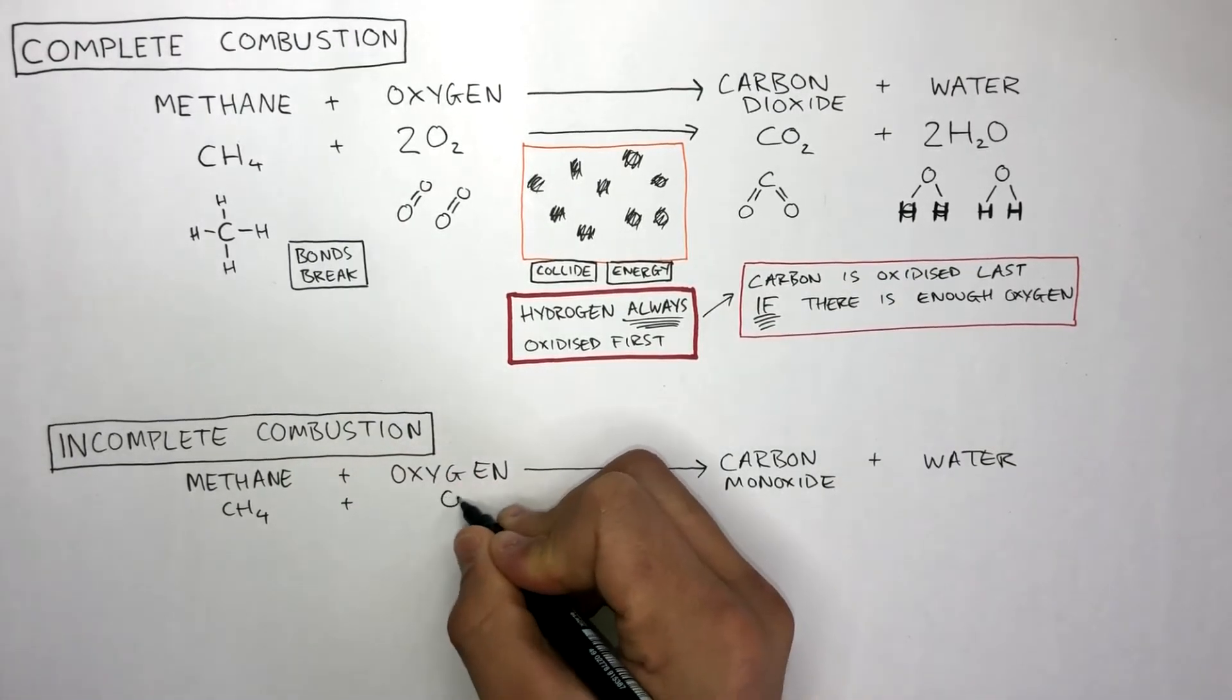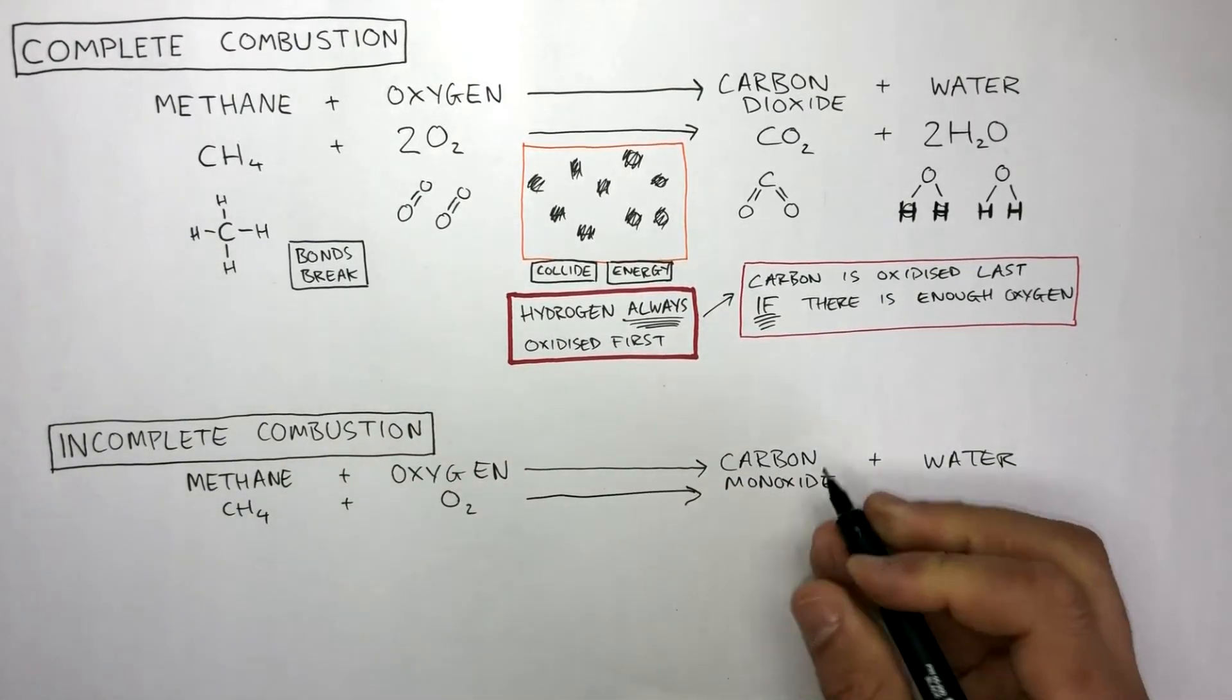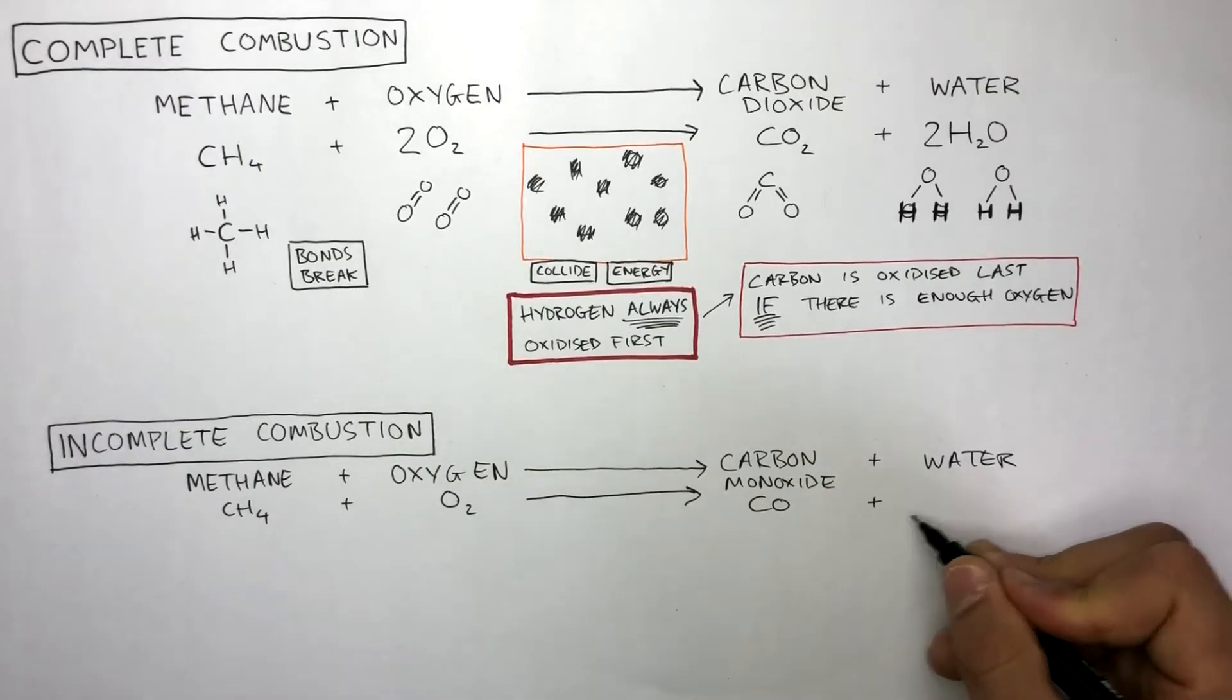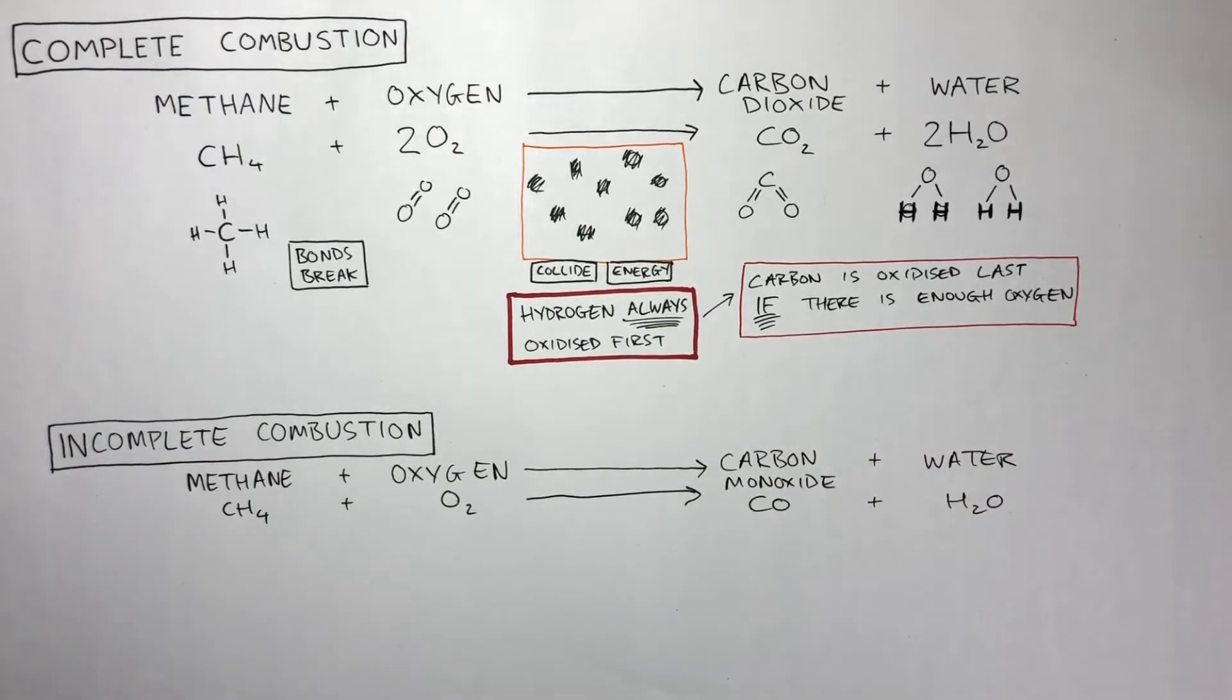CH4 reacts with O2 to produce CO and H2O. As there are four hydrogens on the left and two on the right, we have to put a big two in front of the H2O.